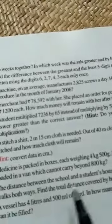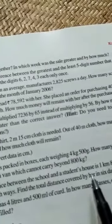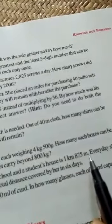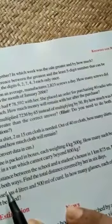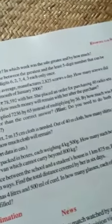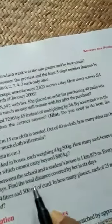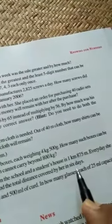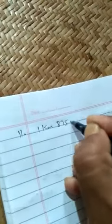Now question number 11. The distance between the school and the student's house is this much kilometer, this much meter. Everyday she walks both ways, means first time both ways as a multiplied by 2. Then find the total distance covered by her in 6 days. Again multiply by 6. Means 1 kilometer 875 meter.